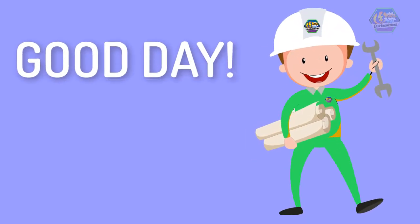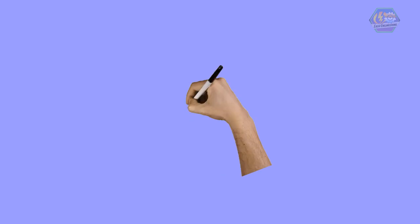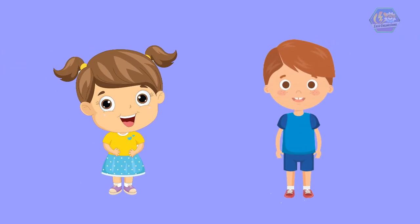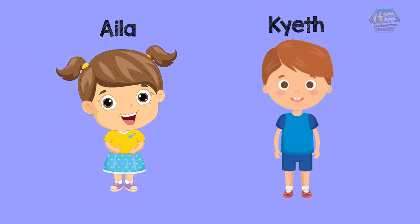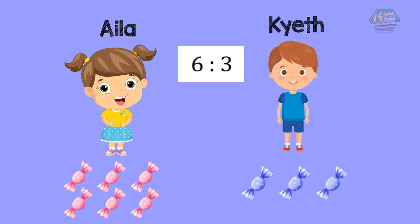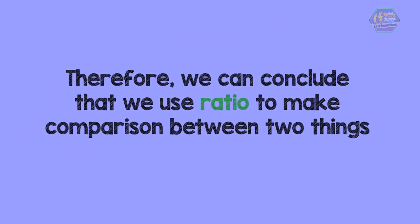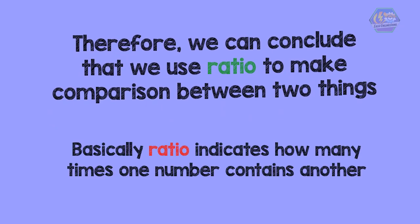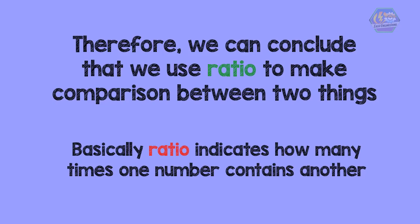Good day learners, this is Easy Engineering. For today's topic we're going to talk about ratio. To understand ratio, let's take a look at this example: there are two kids, Ila and Kit. Ila has six candies while Kit has three candies. Therefore the ratio of candies Ila and Kit have is written as six colon three, read as six is to three. We can also write it as six divided by three. So in this example we are basically comparing the candies Ila and Kit have. We use ratio to make a comparison between two things — ratio indicates how many times one number contains another.